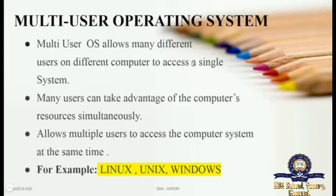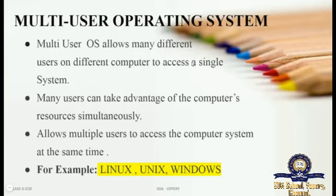Many users can take advantage of the computer's resources simultaneously - they can avail the internet and the network. One network can be shared to multiple systems. For example, an Airtel company builds a tower in your street. That tower doesn't belong to only one person; that Airtel network tower serves more than 50 or 60 users in that particular area. It is sharing a single system to multiple users so all of them can avail the internet.